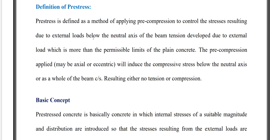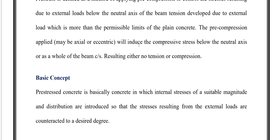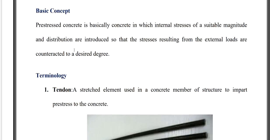The stresses resulting from external loads are counteracted by the pre-induced compression, which acts below the neutral axis. The pre-compression applied may be axial or eccentric, and will induce compressive stress below the neutral axis or the whole beam cross section, resulting in either no tension or no compression. Both sets of stresses get neutralized, or we experience compression below the neutral axis.